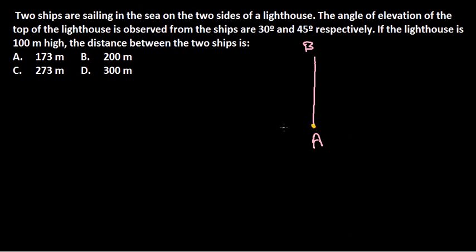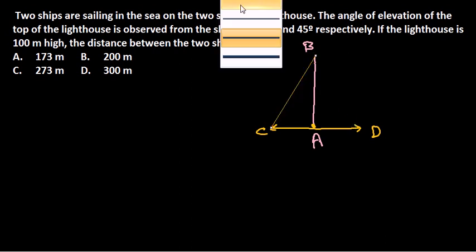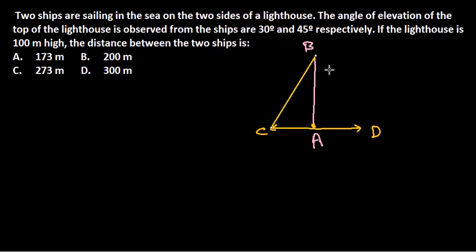The bottom point of the lighthouse is A, and through this point both ships are sailing away in two different opposite directions — let's call them C and D. They're telling us that the angle of elevation of the top of the lighthouse observed from each ship is provided. This angle is 30 degrees and the other angle is 45 degrees.